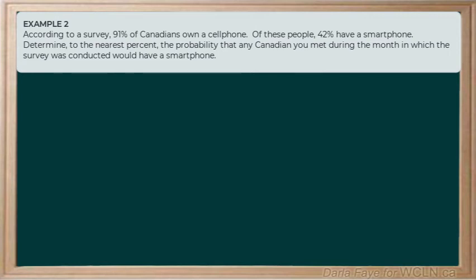In the first line, it tells us that 91% of Canadians have a cell phone. So let's call that the first event. I'm going to label it as the probability of C is 0.91. Next, it says, of these people, now that's a key phrase, 42% have a smartphone. This means that given that a person has a cell phone, so they've fallen in that 91% of Canadians that have a cell phone, then the probability of them having a smartphone is 42%. So this is a conditional probability. We're going to label this as the probability of S, or the probability of a smartphone, given that they have a cell phone, is 0.42.